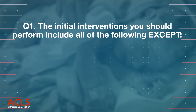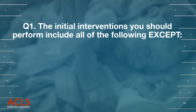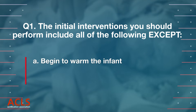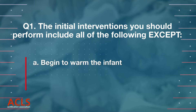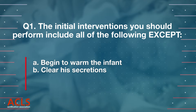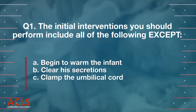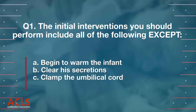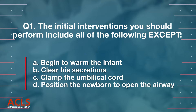Question 1: The initial interventions you should perform include all of the following except: A. Begin to warm the infant, B. Clear his secretions, C. Clamp the umbilical cord, D. Position the newborn to open the airway.